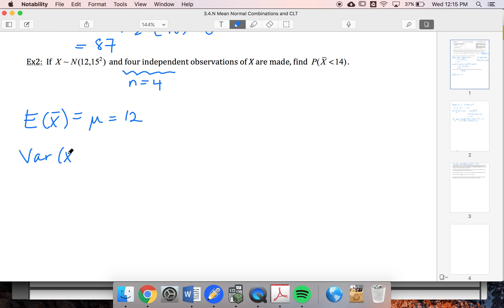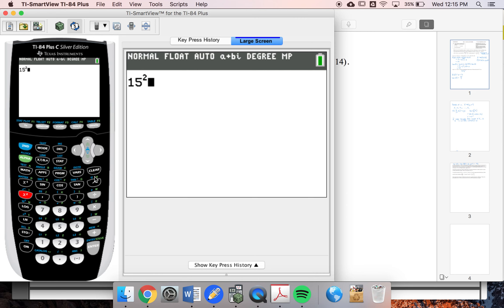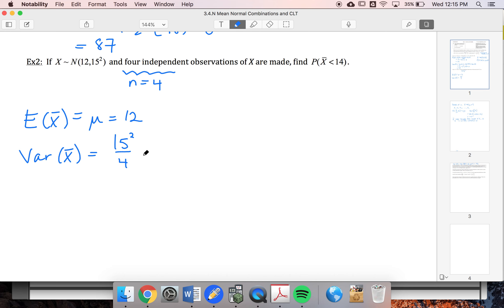Variance of x bar is going to be my variance over 4. So 15 squared over 4, which is 56.25.